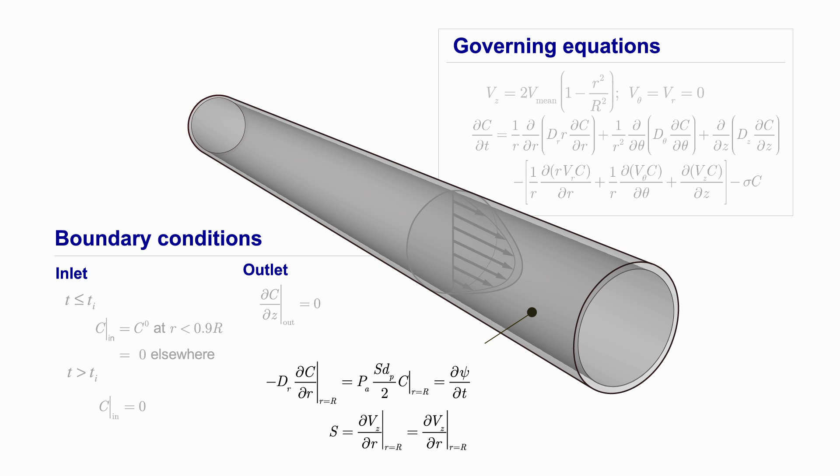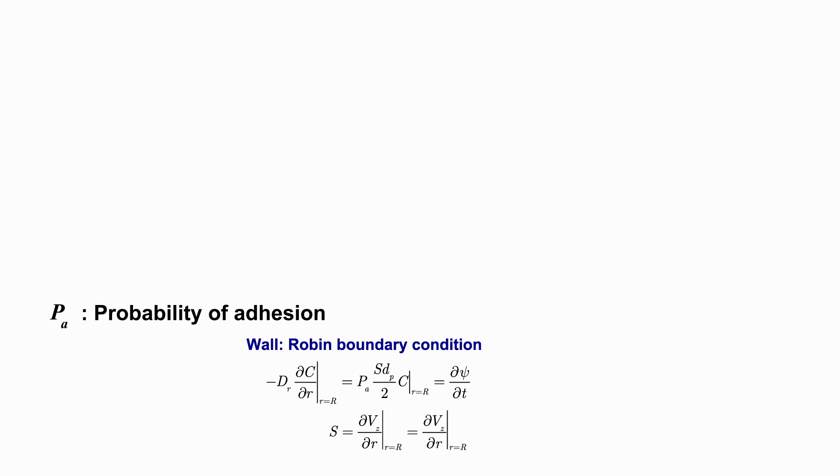The flux of particles that is diffused through the radial boundary is influenced by the wall shear rate, the particle size, and the probability of adhesion. The objective is to increase the probability of adhesion.